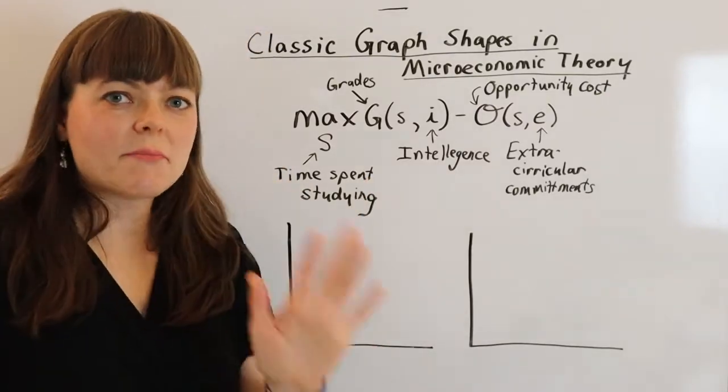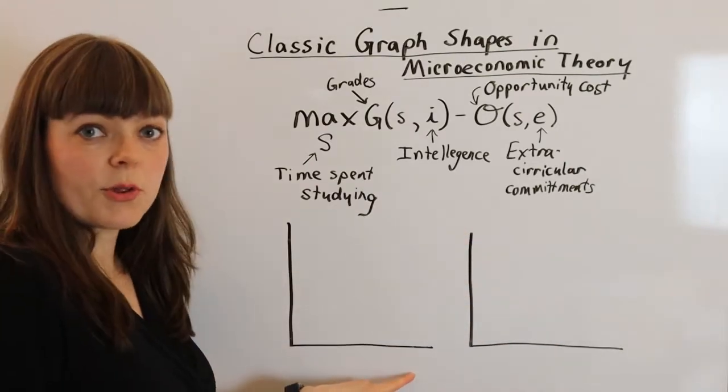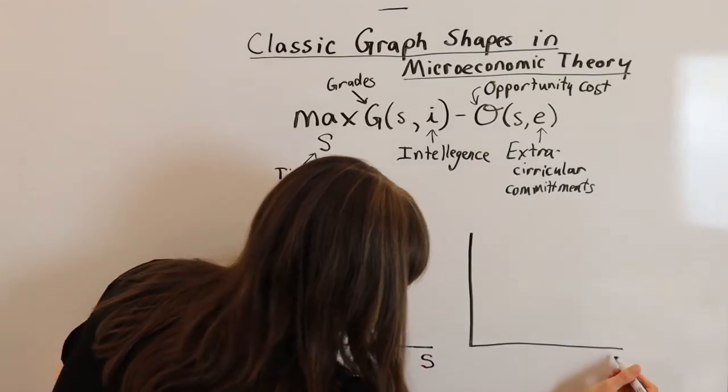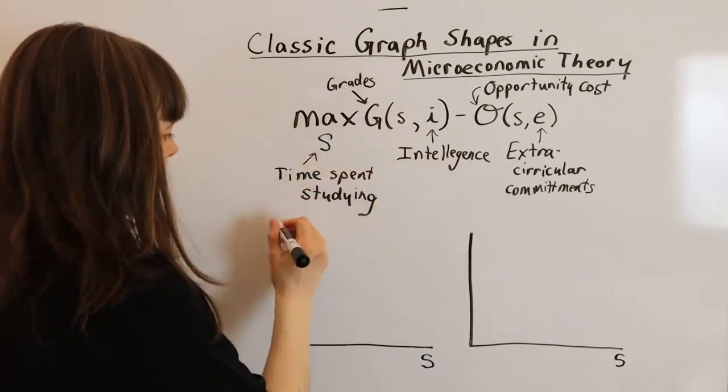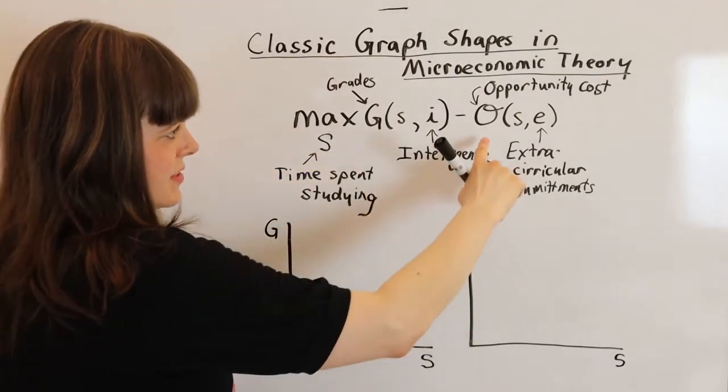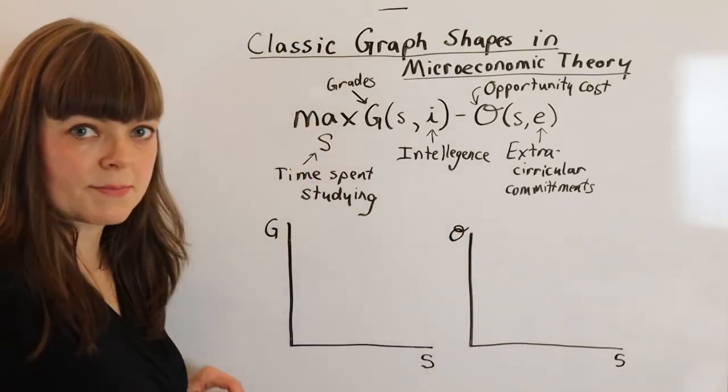And by the way, when you set up graphs, usually it's going to be the choice variable on the x-axis. So in this case, time spent studying will go on the x-axis with both graphs. And then our benefit is going to be on the y-axis because grades are a function of time spent studying and our opportunity cost is a function of time spent studying.